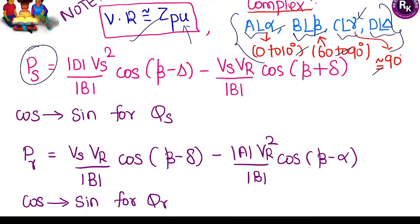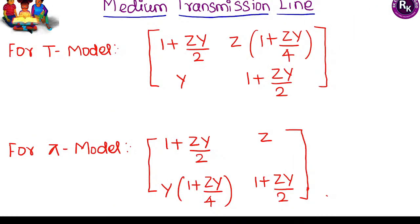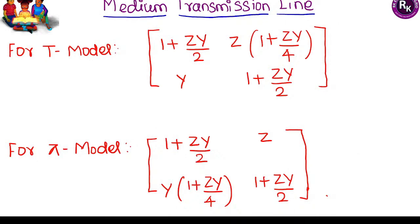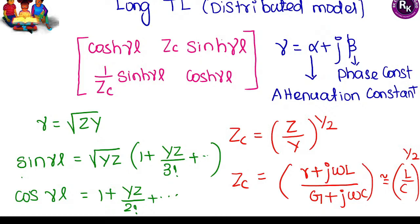Medium transmission line can be modeled as T-model or π-model (Y-model). For long transmission line, the ABCD parameter A is written in terms of characteristic impedance Zc. Characteristic impedance Zc equals the square root of Z/Y, where Z is the series impedance and Y is the shunt admittance. For a lossless transmission line (ignoring R and G), Zc simplifies to √(L/C). The propagation constant γ = α + jβ, where α is the attenuation constant and β is the phase constant.